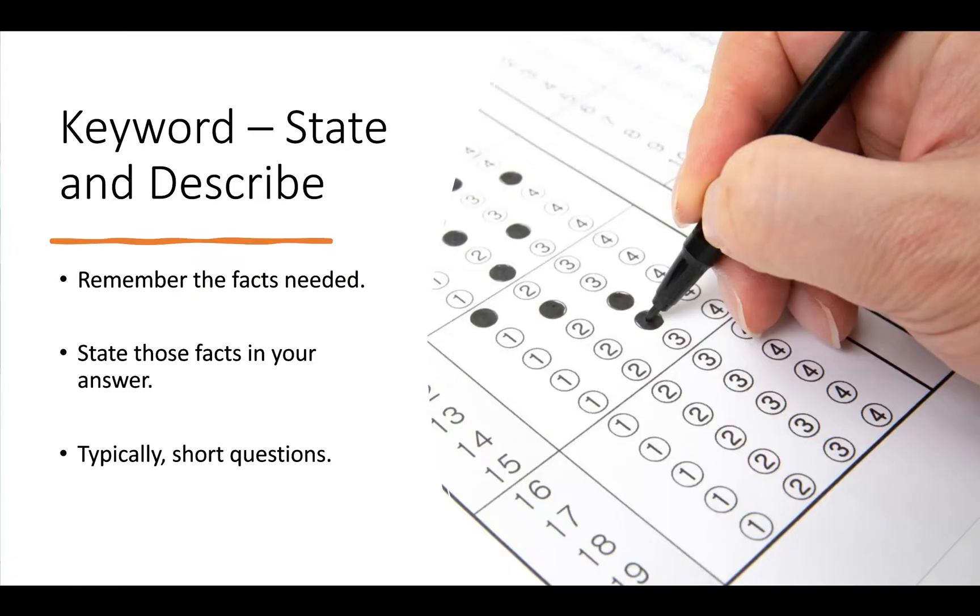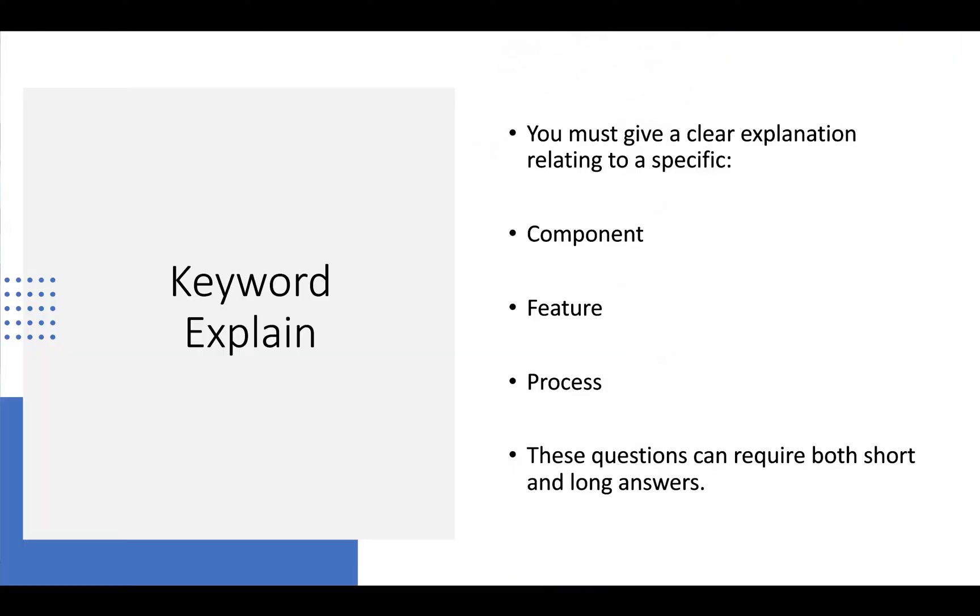First and foremost, I'm going to go over the keywords. 'State' and 'describe' - remember the facts needed, state those facts in your answer. Typically short answer questions. Next we have 'explain' - you must give a clear explanation relating to a specific component, feature, or process. These questions can require both short and long answer questions.